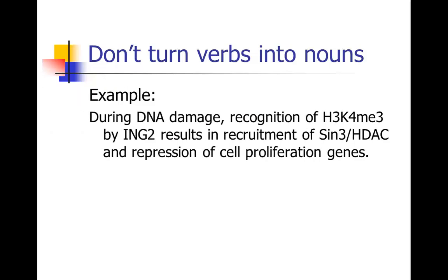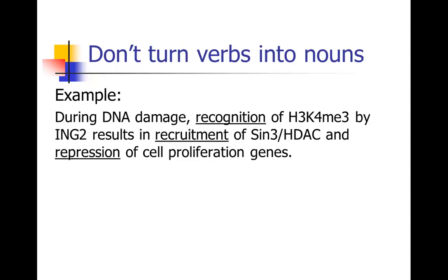Here's an example sentence: 'During DNA damage, recognition of protein one by protein two results in recruitment of protein three and repression of cell proliferation genes.' Notice that we have a lot of nouns in this sentence: recognition, recruitment, and repression — all nouns that could have been verbs: recognize, recruit, and repress. We saw this also with many examples last week. So we're going to go ahead and turn some of those nouns back into verbs. When you do that, it's actually going to force you to get rid of some ambiguities that often crop up when you write with a lot of nouns.